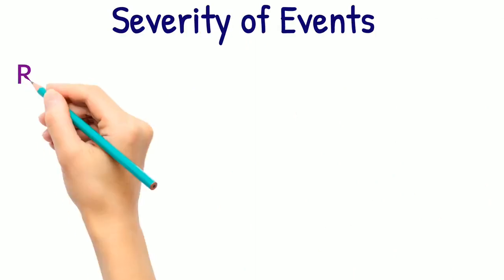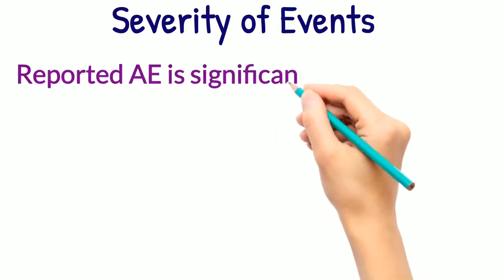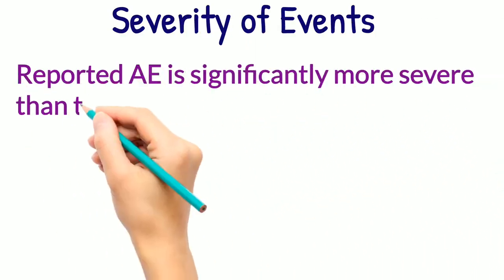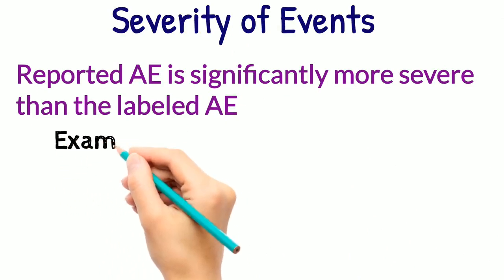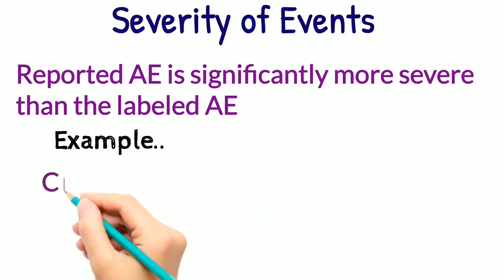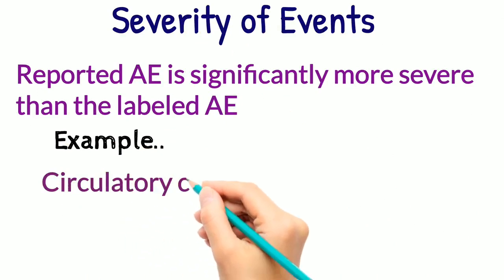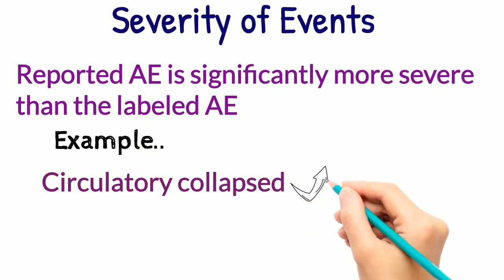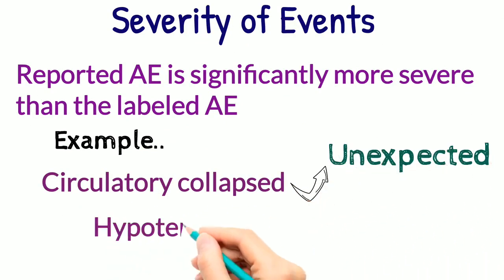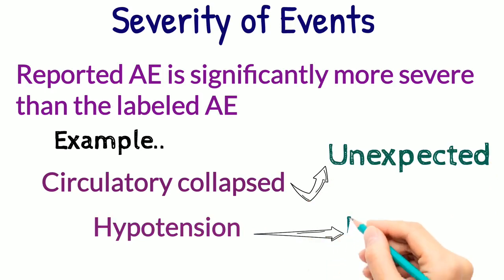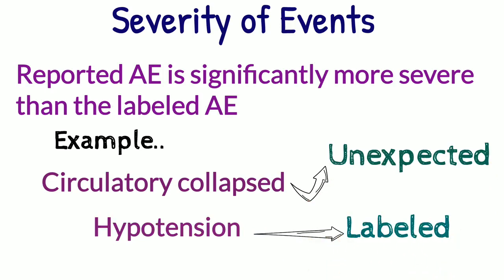Next is severity of events. If a reported adverse event is significantly more severe than the labeled adverse event, then it should be considered unlabeled. For example, circulatory collapse is considered unexpected when hypotension is labeled.